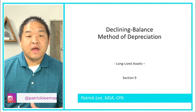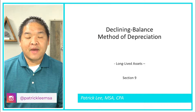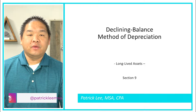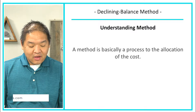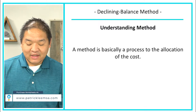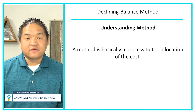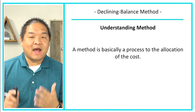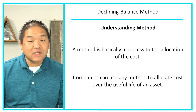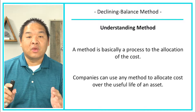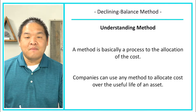In this lesson we're going to go over the final method we're going to learn in this section — the declining method. Let's review these methods and why we use them. A method is basically a process of the allocation of a cost over the useful life, so this is an allocation approach. Companies can choose any method they would like, and in this case we're talking about the declining method.